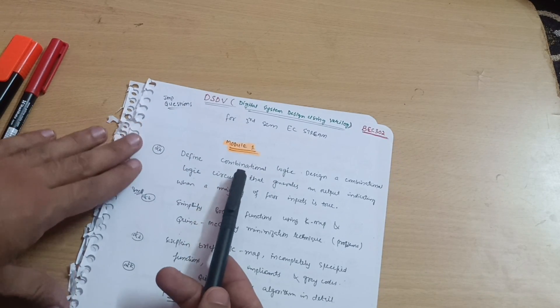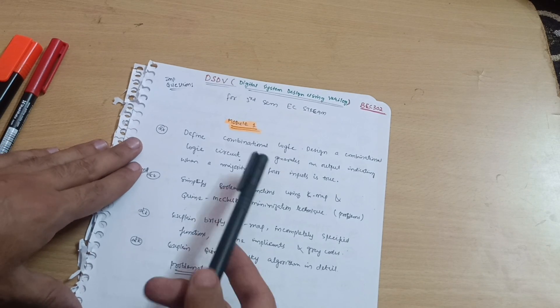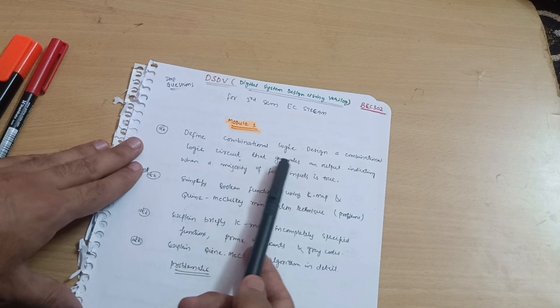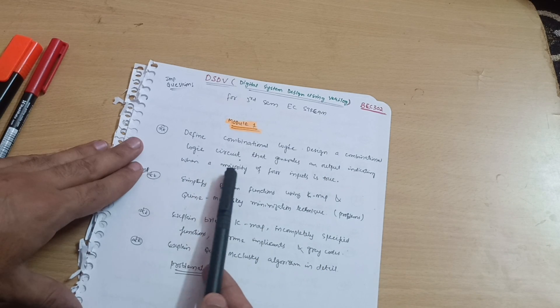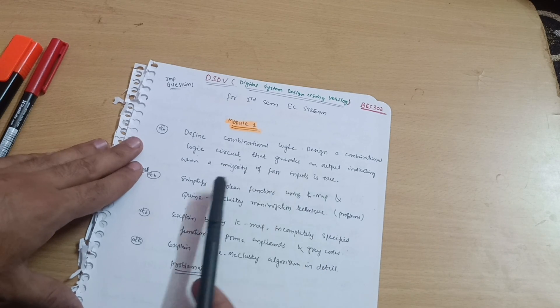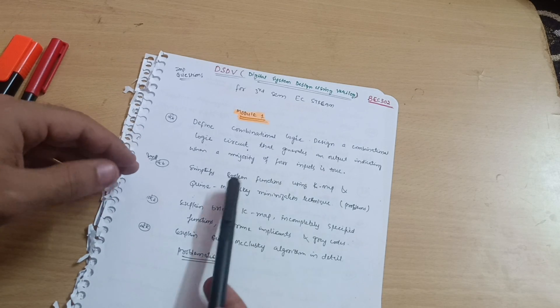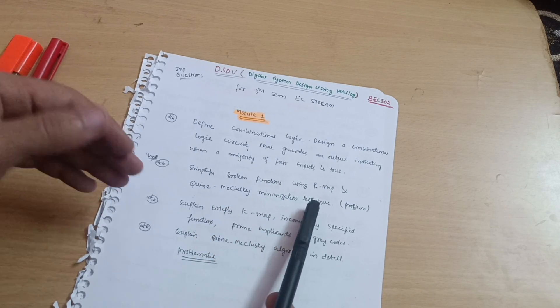Define combinational logic. Design a combinational logic circuit that generates an output indicating when a majority of four inputs is true. Simplify Boolean functions using K-map and Quine-McCluskey minimization techniques. Problems would be definitely on this particular topic. You should go through various problems.